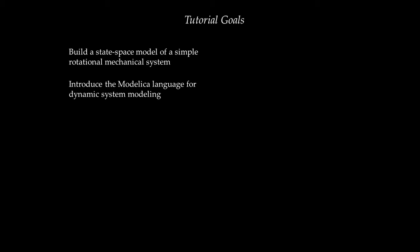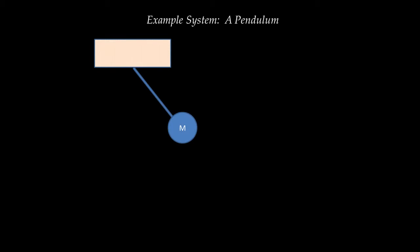I'm going to start by talking about the first goal: building a state-space model of a very simple rotational mechanical system. The system I'm interested in is essentially a pendulum — a foundation that is fixed, with a pendulum of mass M and length L attached to it. The pendulum is acted upon by an external torque U of T. I'm interested in seeing how the pendulum oscillates both freely when the torque is zero and under the influence of the torque. Specifically, I'm interested in the angle between the pendulum and the vertical, which I call Y of T.